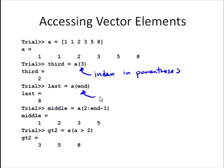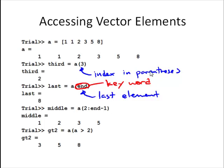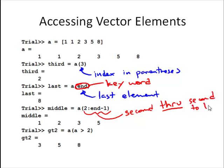There's a special way to access the last element using the keyword end. The end keyword always means the last element in the array when used in an index. We can also use indexing to get groups of elements. For example, a(2:end-1) takes the second through second-to-last elements of a, and assigns them to a new vector called middle — so middle is a new vector that includes those middle four elements of a.